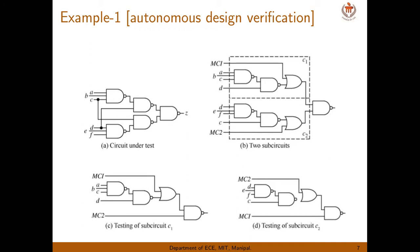We will take one example for autonomous design verification. This is the circuit under test. You can see one output and 6 inputs. So if you want to use exhaustive testing, you have to produce 2 power 6 number of test vectors. But if you partition this whole circuit into 2 like this,